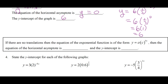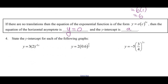If there are no translations, then the equation of the exponential function is of the form y equals a times c to the power of bx. The equation of the horizontal asymptote is y equals zero — no translations, the only thing that can affect the horizontal asymptote. And the y-intercept is a, because when x is zero, bx is zero, c to the zero is 1, so y equals a times 1 equals a.